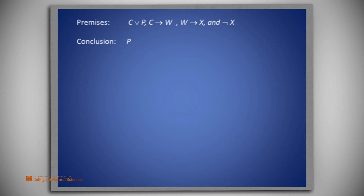The premises of this problem are: C or P, C implies W, W implies X, and not X. The conclusion we seek is P.